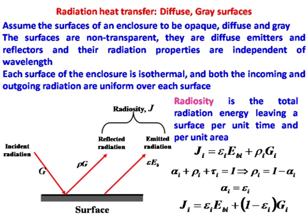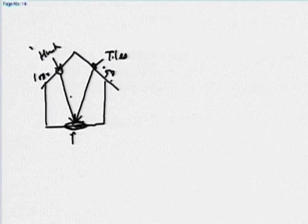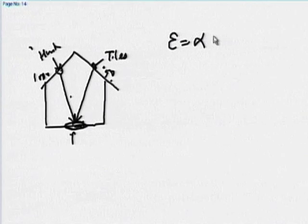Non-transparent means opaque: tau equals 0. So alpha and rho are related by alpha plus rho equal to 1. And for a diffuse gray surface, rho plus epsilon equals 1 because of Kirchhoff's law, which tells me epsilon equals alpha for a diffuse gray surface.